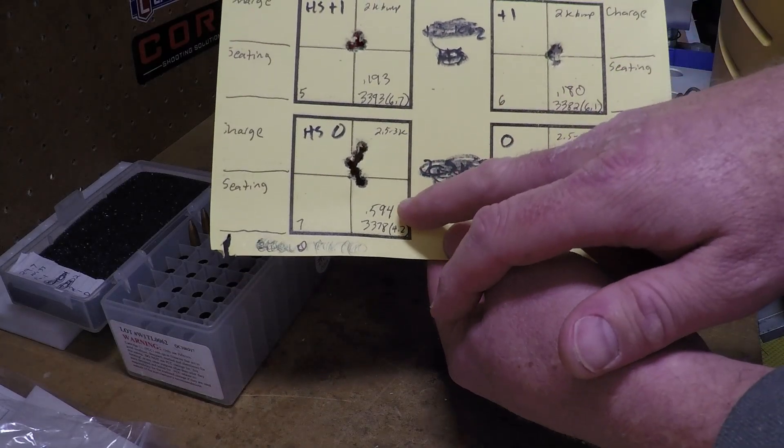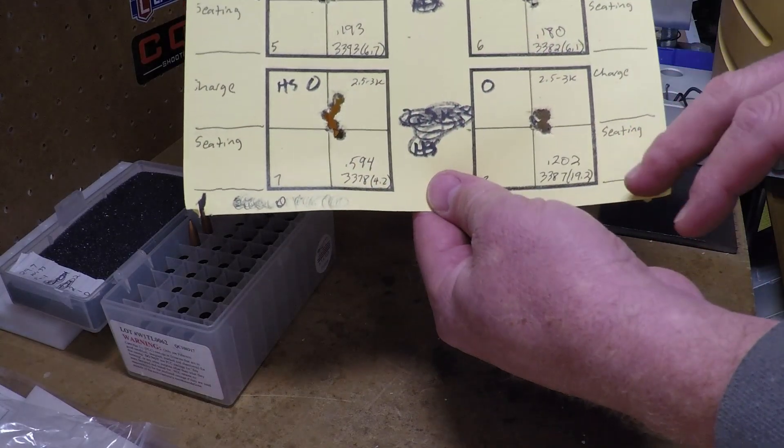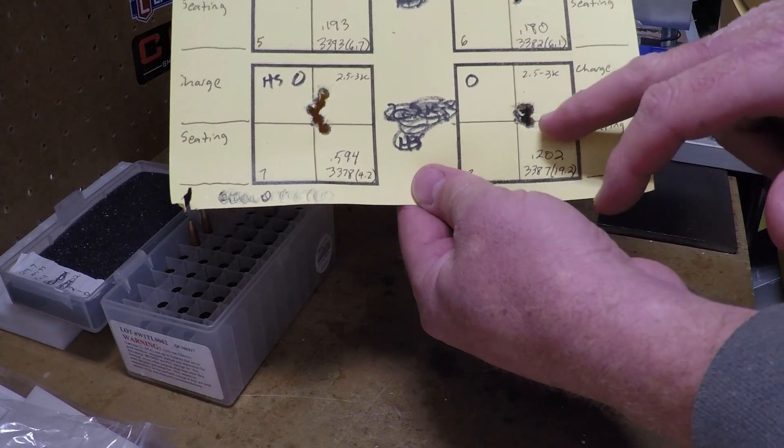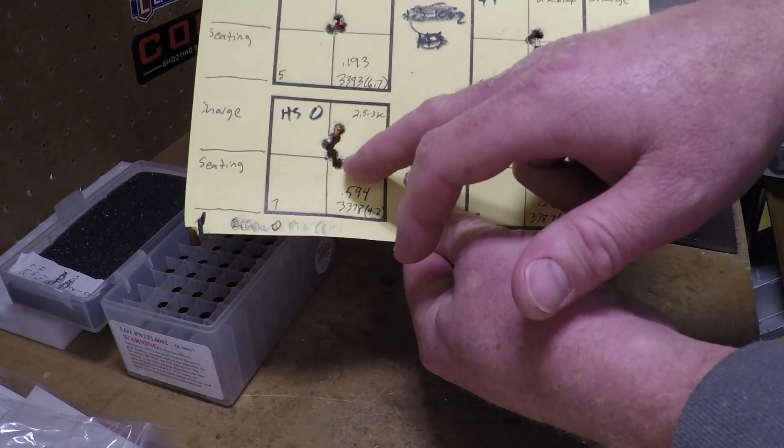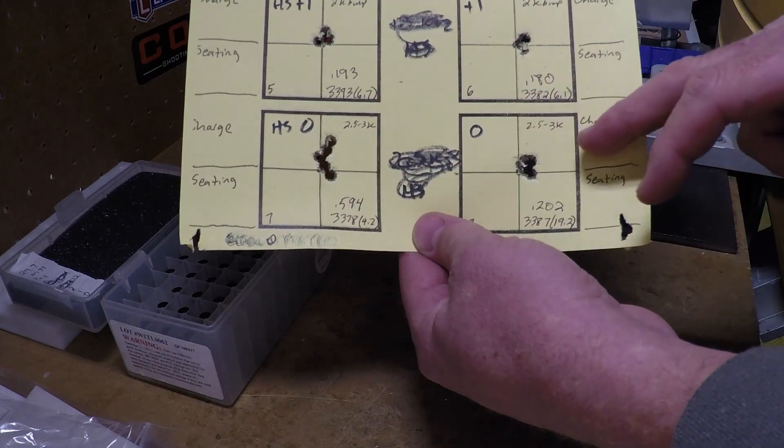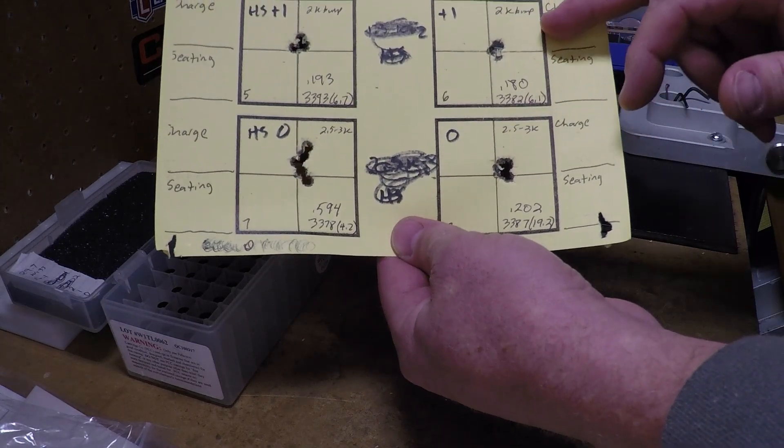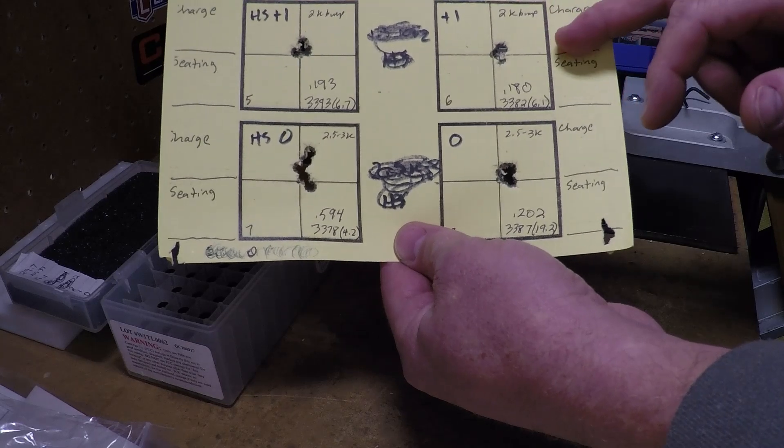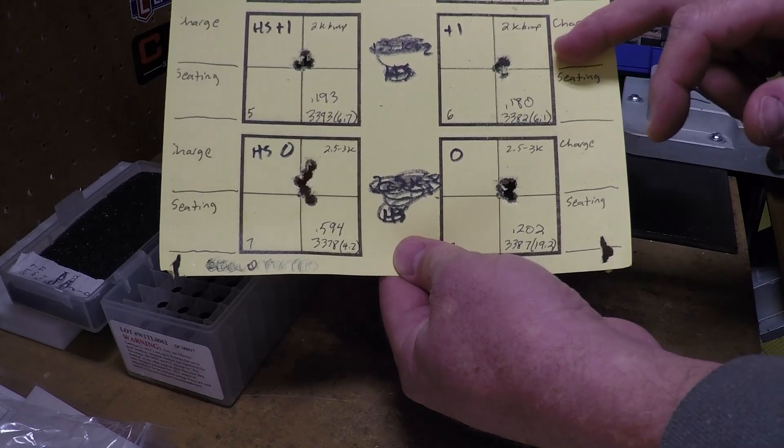And then we bumped it about two and a half to three thousandths, and you can see the groups opened up. This one here, 0.202 and no wind, not bad. But this one in the wind, boy, that had some serious vertical. So you can see here from this side here, I'd say two thousandths bump is probably a really good bump. This is in a six PPC cartridge.